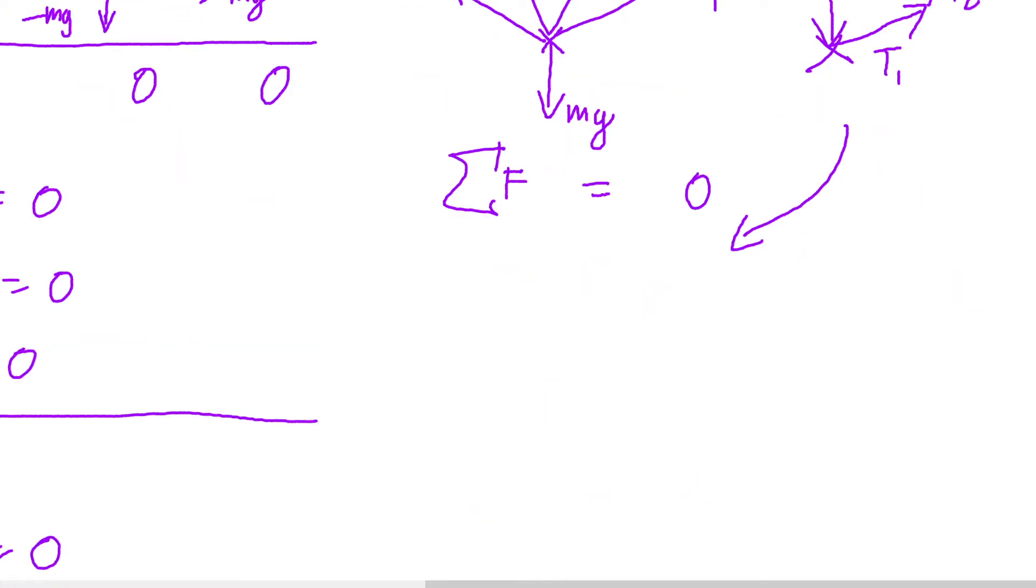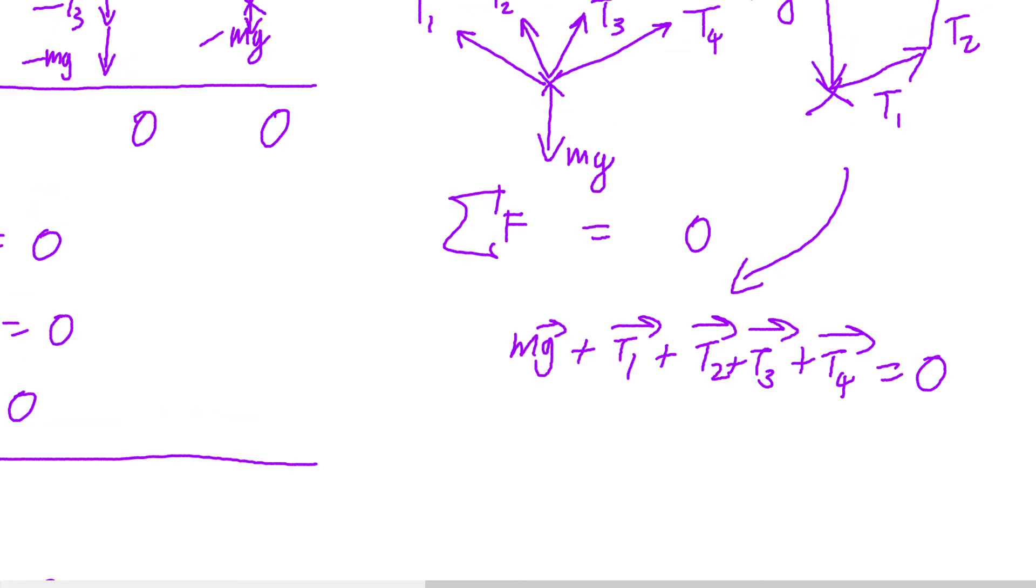Similarly to how I said the sum of all the forces in the previous situation was zero, we can say the same thing here and write that down algebraically using vector notation. You can see how this is similar to other equations we figured out from the resultant force information and all of the forces acting on the free body, like in the previous question. For instance, the equation t3 minus mg equals zero for the third body, except this is in two dimensions.